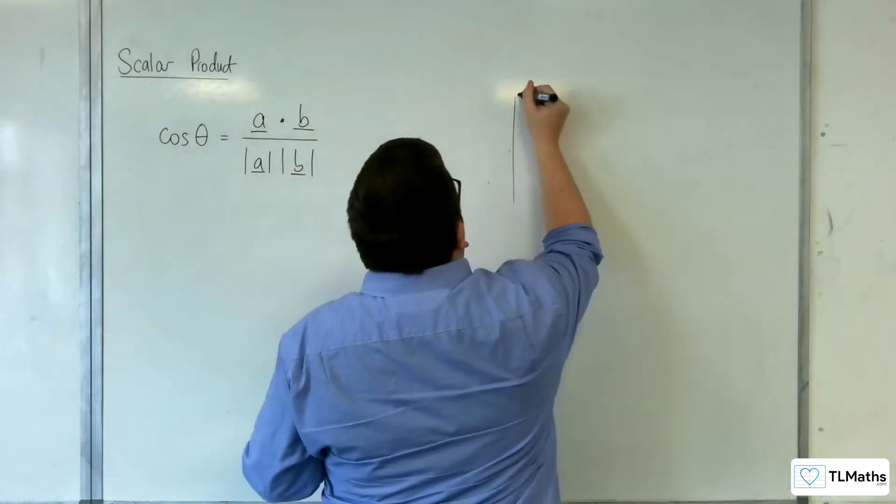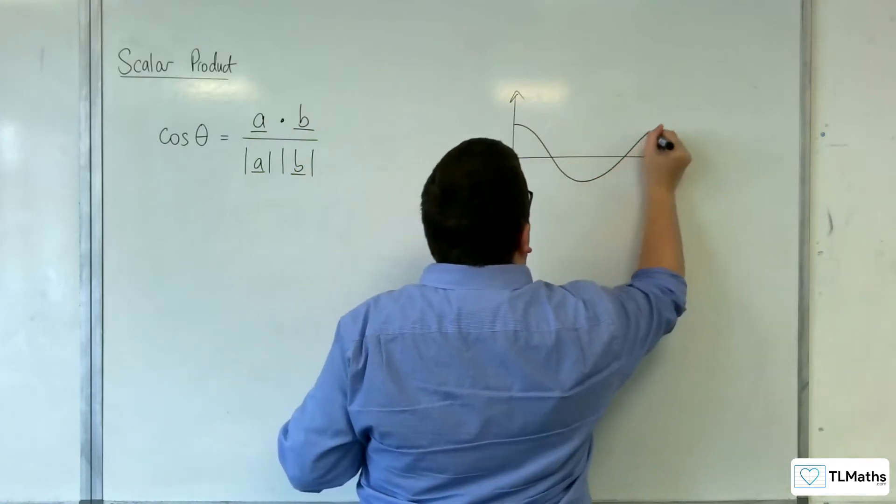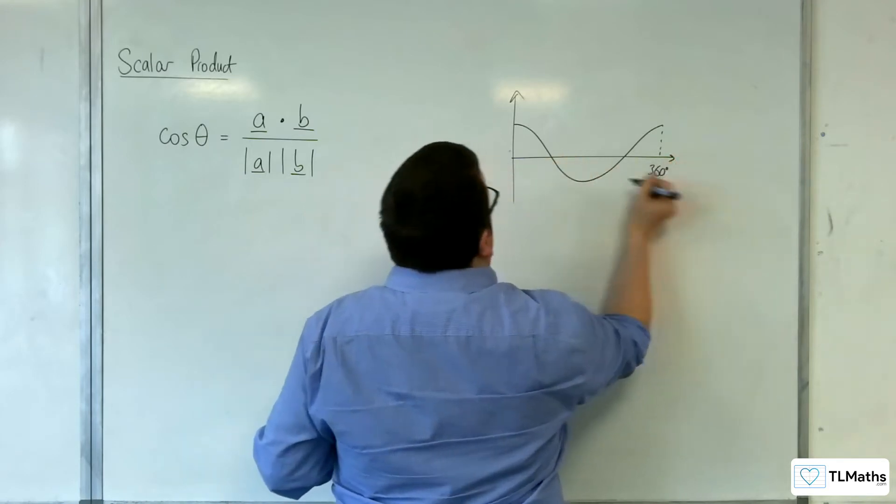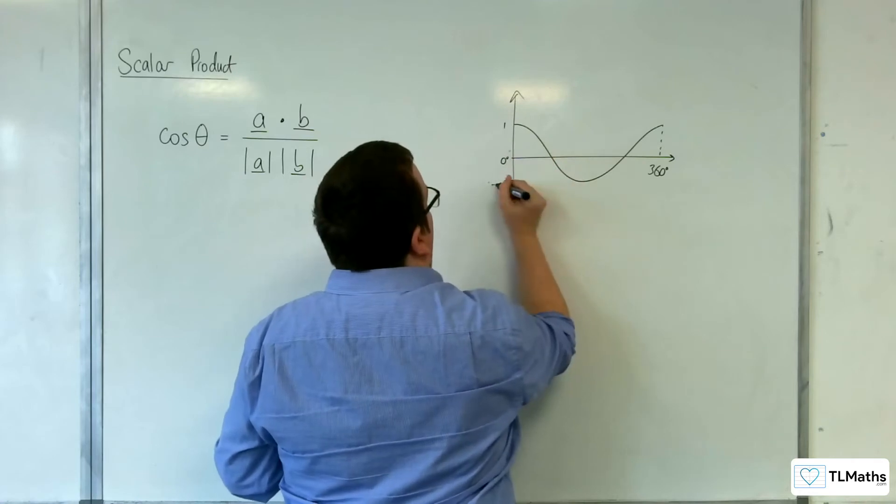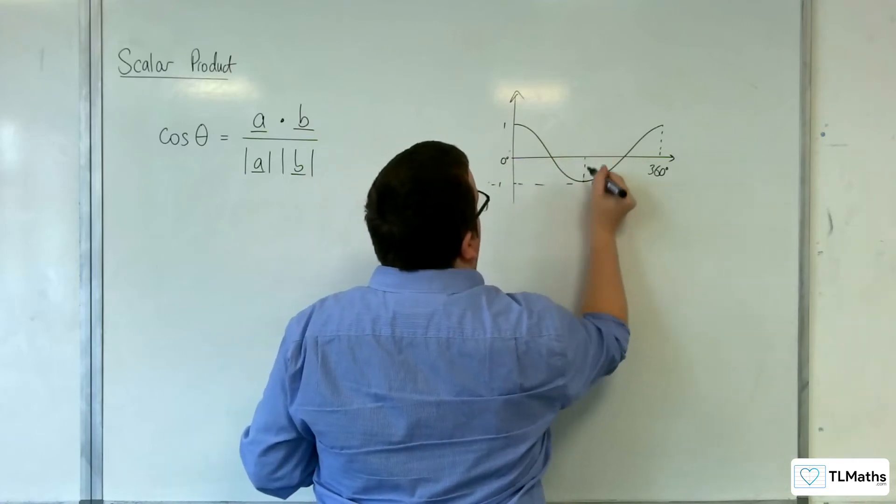So here is the cosine curve, which we all know and love. Here's 360 degrees, here's 0 degrees, here's 1 and here's minus 1. And that point is 180 degrees of course.